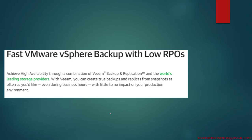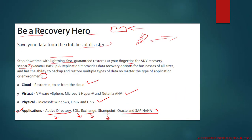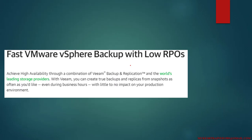Fast VMware vSphere backup with low RPO, smart storage, and data reuse. Achieve high availability through a combination of Veeam Backup and Replication and the world's leading storage providers. With Veeam, you can create true backup and replication from snapshots as often as you like, even during business hours, with little or no impact on your production environment. Taking a snapshot every hour or every six hours won't impact production — there may be a little CPU utilization, but it keeps your data safe and secure.